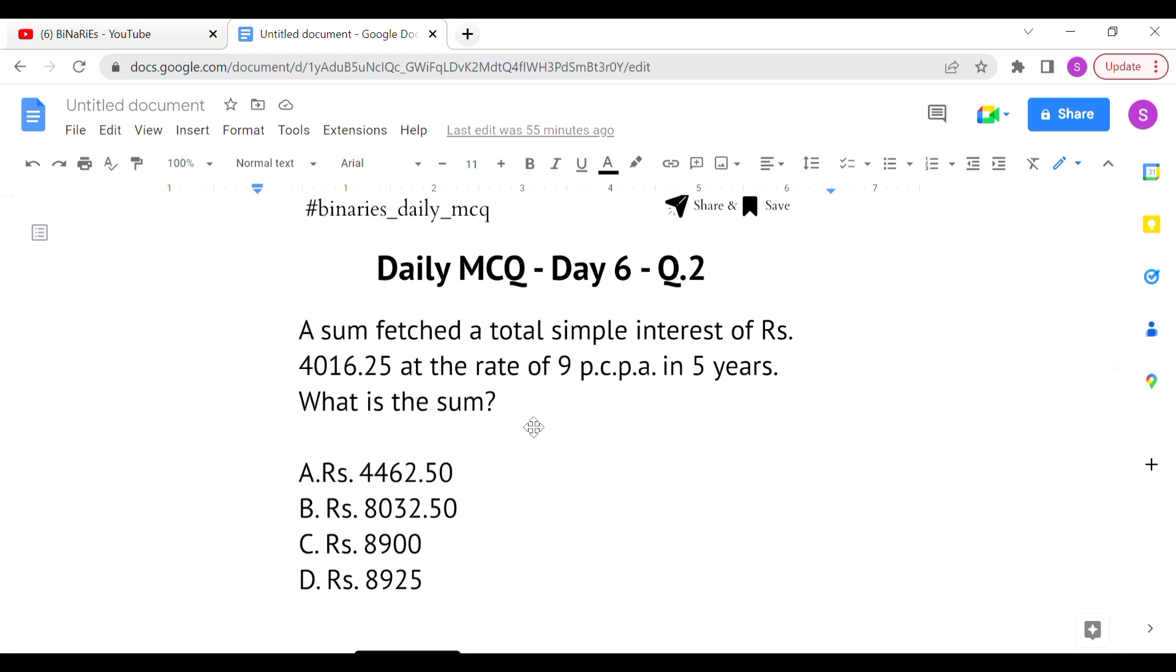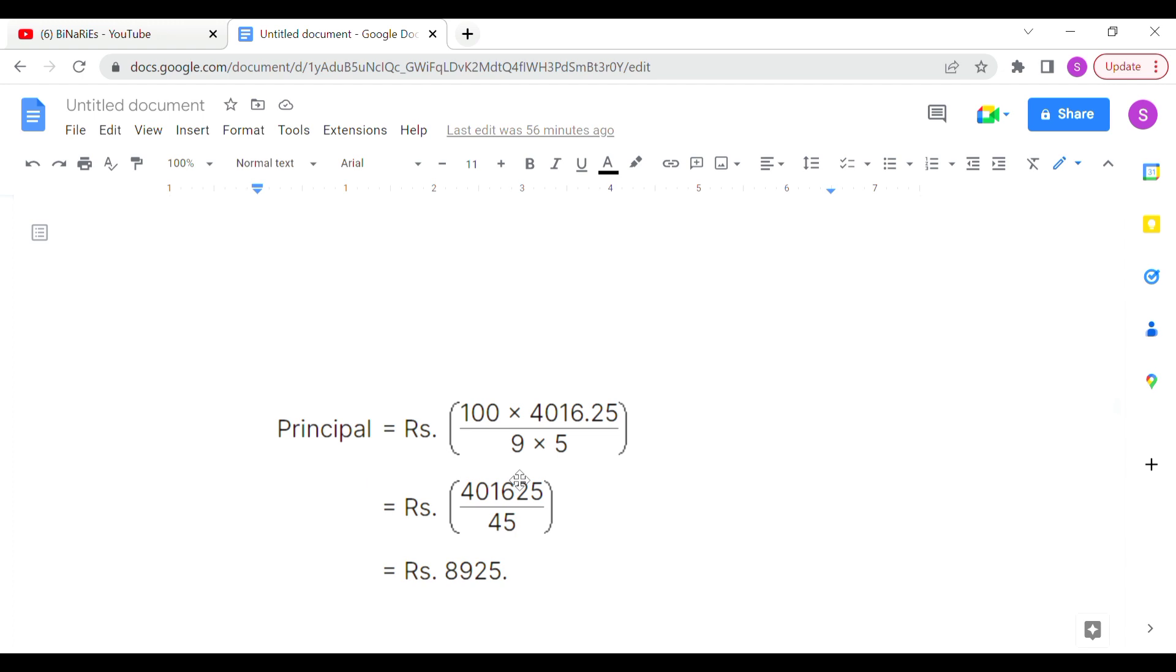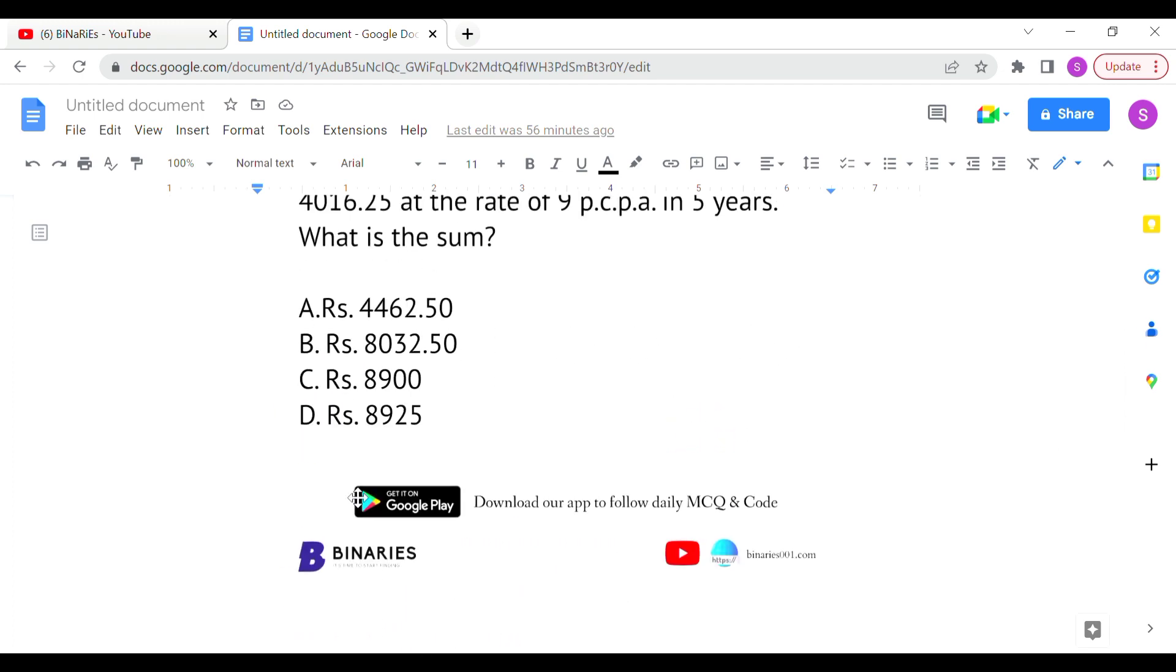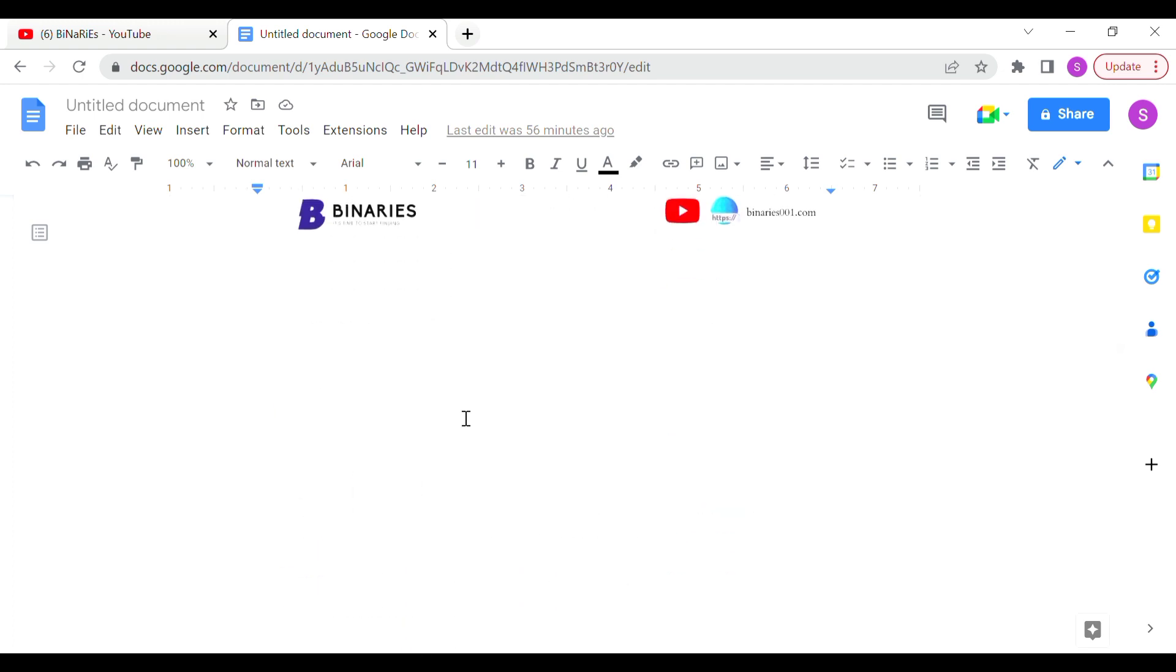Second question: A sum fetched a total simple interest of rupees 4,016.25 at the rate of 9 percent per annum in 5 years. What is the sum? Here we need to find the principal amount. The formula is: simple interest equals P times N times R divided by 100. We have the simple interest, rate, and number of years, so we calculate the principal amount as rupees 8,925. Option C is the correct answer.